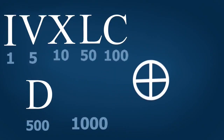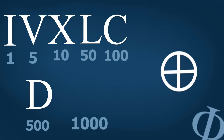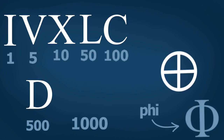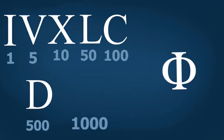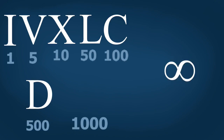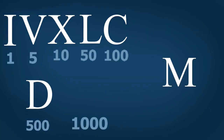For one thousand: one day a Roman was reading a Greek text and found the Greek letter Phi. He observed that this letter was very similar to the symbol for one thousand, so he replaced it with Phi. With time, the extra parts were removed, and the symbol became simpler — resembling the symbol of infinity. Then it became less rounded, and eventually became the letter M, because it looked like M and 'Mille,' the Latin word for one thousand, starts with M.